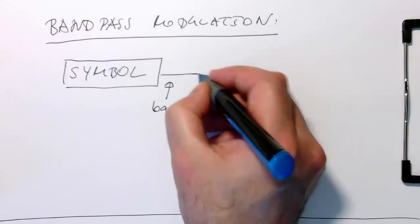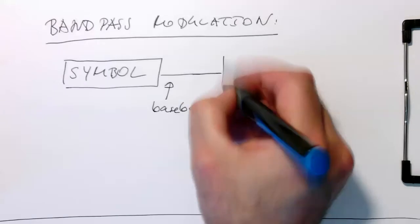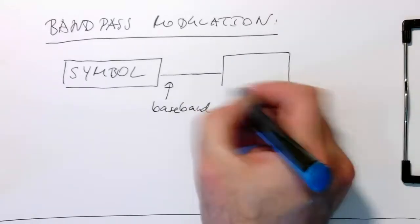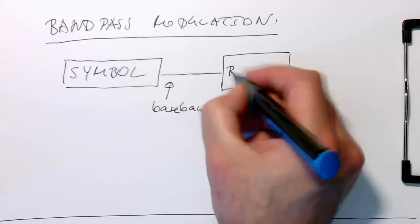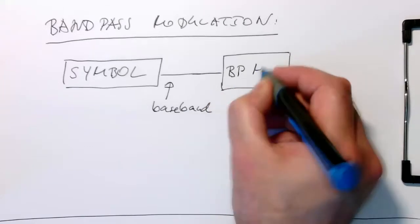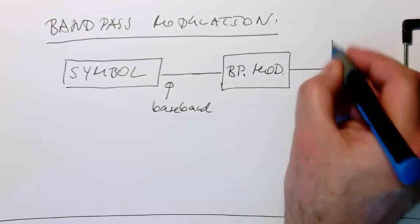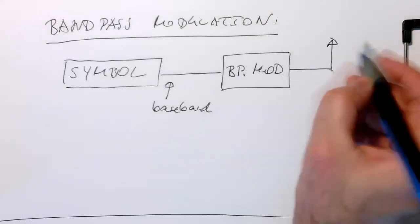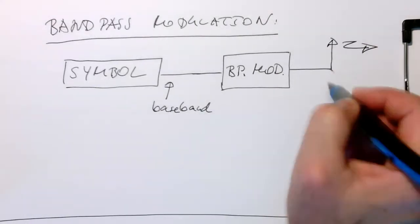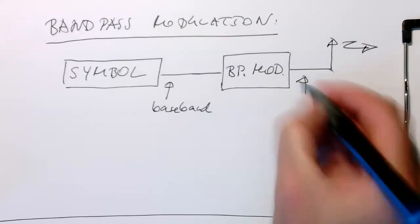A stream of amplitudes can be complex. And then here we've got the so-called bandpass modulator, which generates a bandpass signal and then goes out to the air, to our channel. Here we've got our bandpass signal.